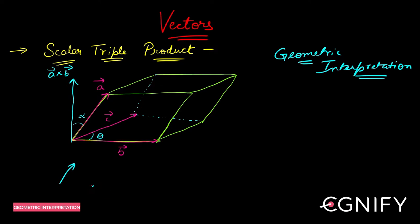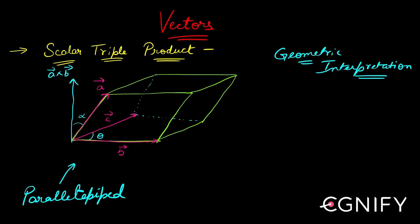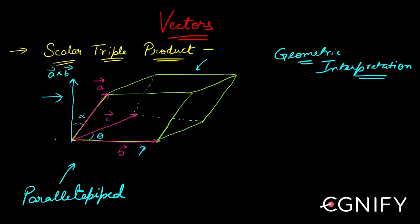This figure is called a parallelepiped. What is unique about it? It has two parallelograms, one on top and one below, and it is sort of tilted — shifted by an angle alpha about this vertical line. The pink vectors a-bar, b-bar, c-bar are your vectors.